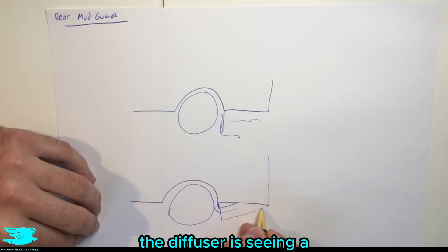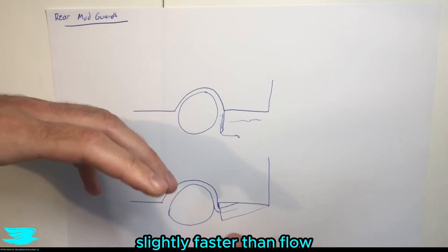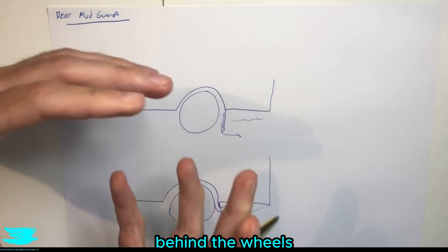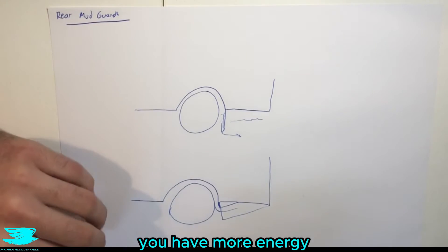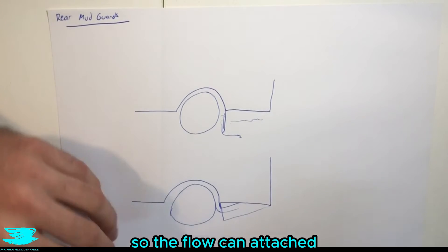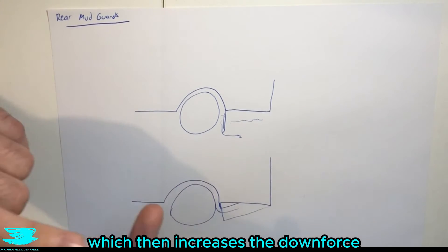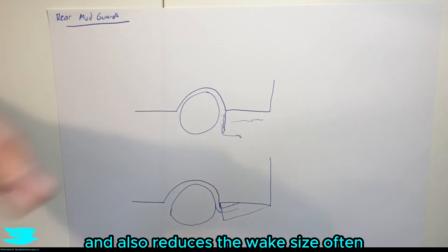What's more, now the diffuser is seeing a slightly faster moving flow as well as a smaller wake. So this portion of the diffuser behind the wheels can now perform better. You have more energy so the flow can stay attached which means that the diffuser can be more of an aggressive angle which then increases the downforce and also reduces the wake size often.